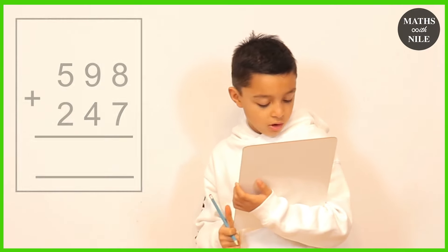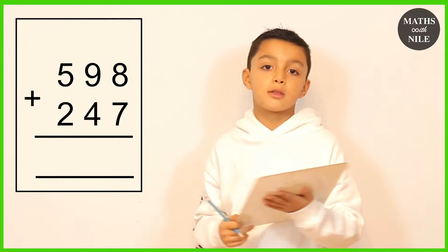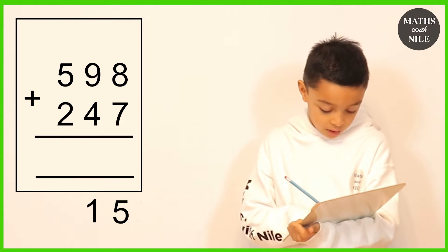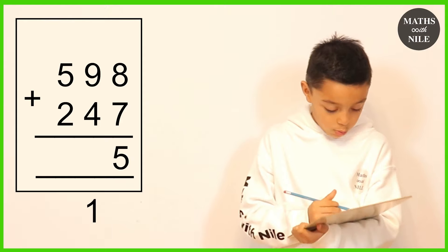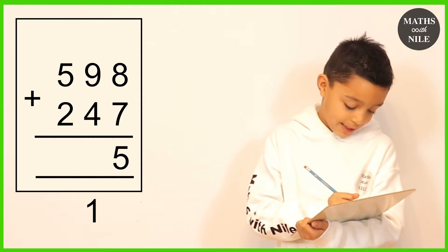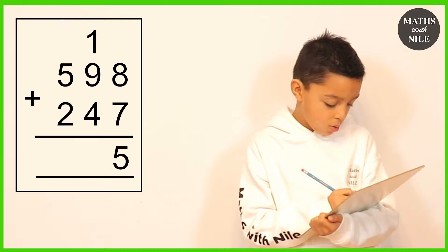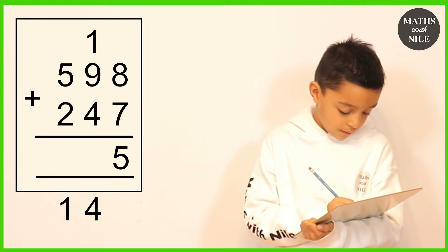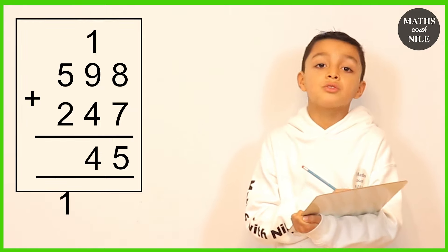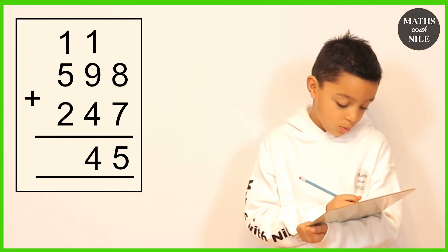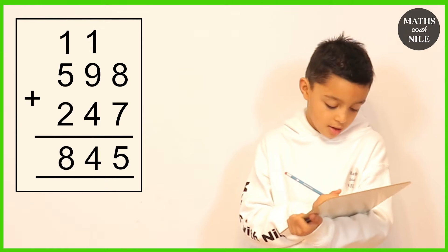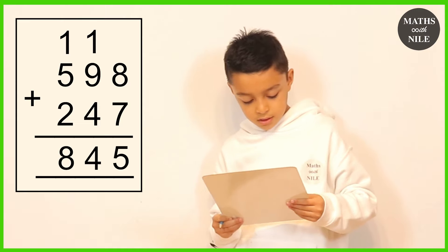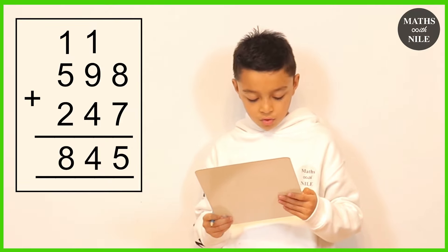Question number seven is 598 plus 247. We do 8 plus 7, which is 15 — put our 5 underneath the units column and carry the 1. Then 9 plus 4 is 13, plus the carried 1 is 14 — put the 4 underneath the tens column and carry 1 to the hundreds. Then 1 plus 2 is 3, and 3 plus 5 is 8 — put an 8 underneath the hundreds column. So 598 plus 247 equals 845.